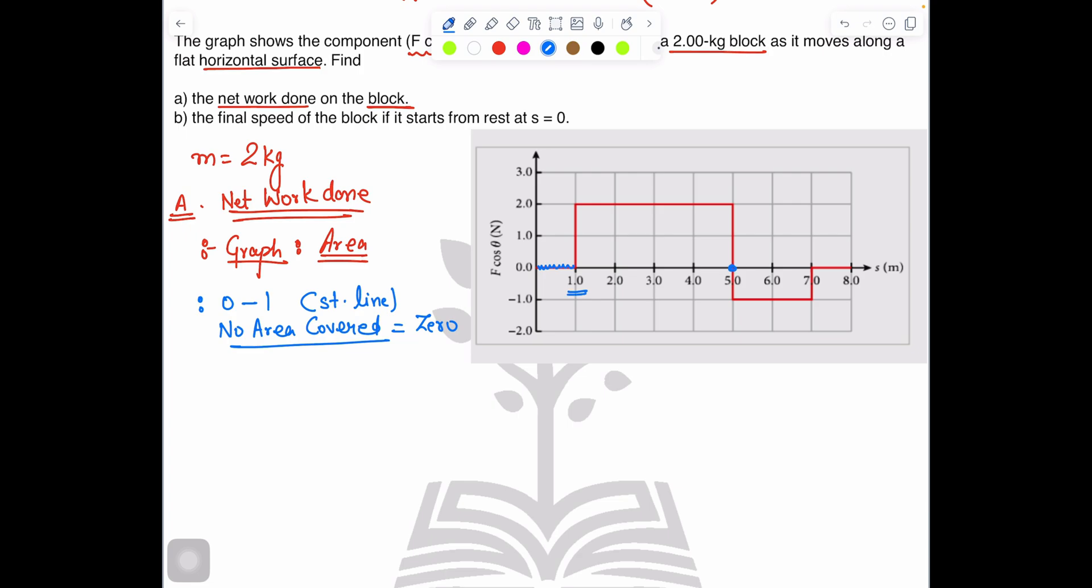Now 1 to 5, just take this. This is the area. So work done 1 to 5, we have force times distance. What is the value of force? The value of force is 2. And how much distance I covered? 5 minus 1. So 2 multiply 4, which should equal 8 joules.